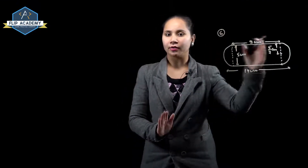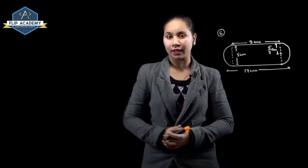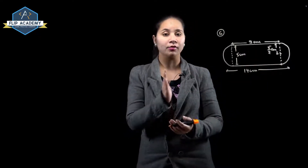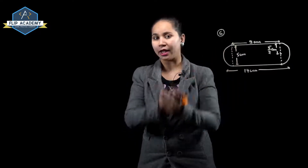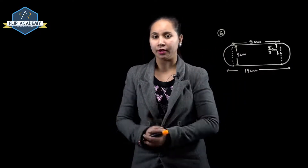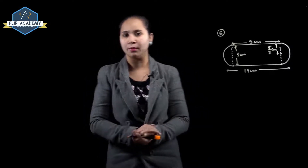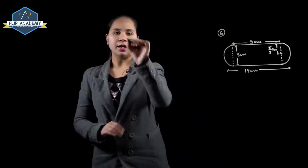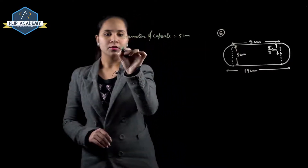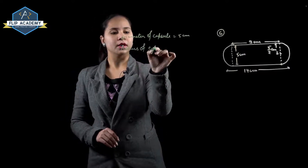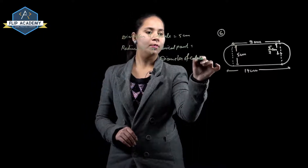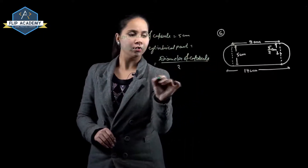Looking at the figure of the given capsule: the overall length of this capsule is 14 mm, and the hemispherical part has a diameter of 5 mm. So the radius of the hemispherical part equals 5 upon 2 mm. Diameter of capsule equals 5 mm, so radius of cylindrical part also equals 5 upon 2 mm.